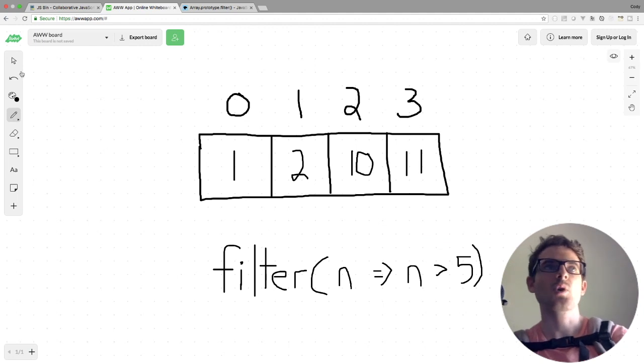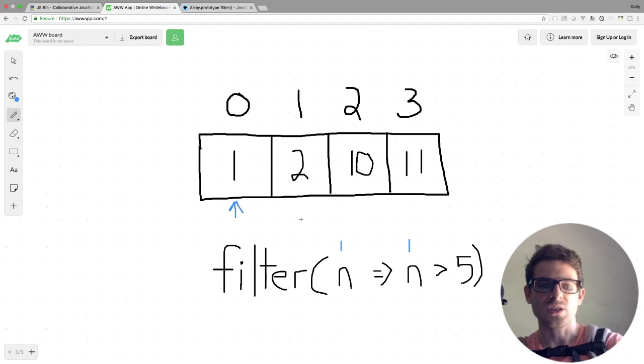So when we run this code, basically what's going to happen is it's going to step through every single element of the array. We're going to start at 1 and check is 1 greater than 5. If it is, it's going to keep that element in a new array. Otherwise, we just continue on. So in this case, 1 is not greater than 5, so we move on to index 1, which is the element of 2. So at this point, we check is 2 greater than 5. It's not, so we move on to the next one.